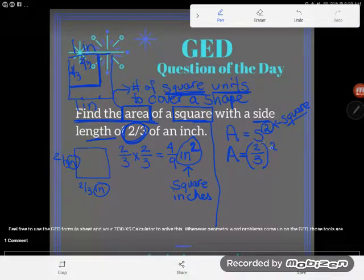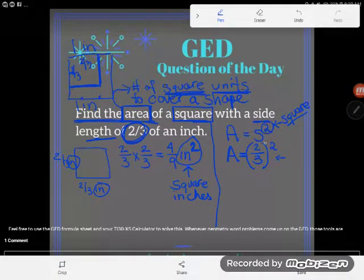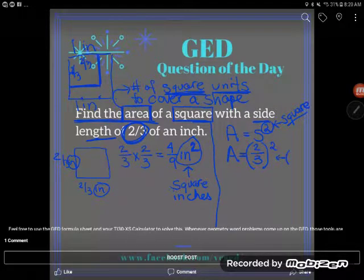So the first thing you want to do is put in this parenthesis. You can put parentheses in your calculator, so go ahead and open up a parenthesis for me. Now, to get a fraction in your calculator, you press the N over D button.